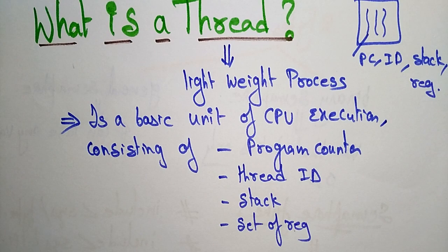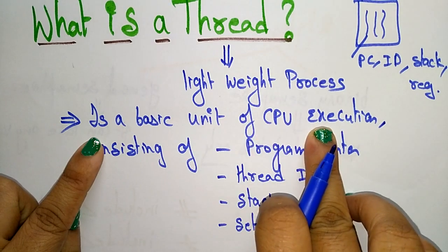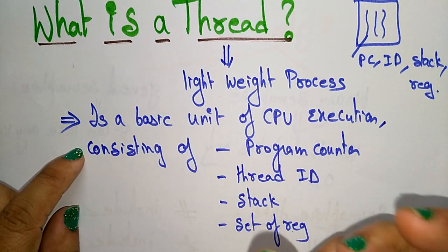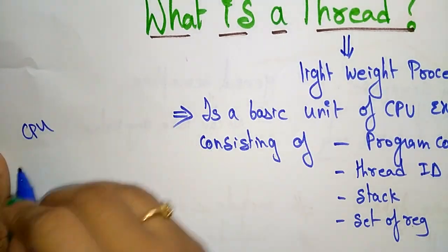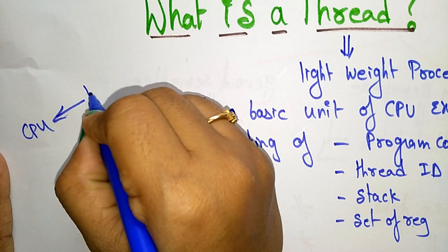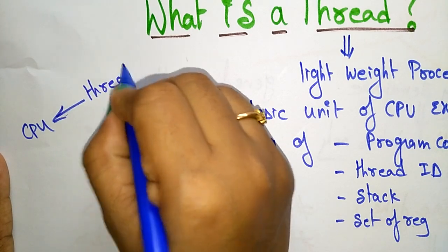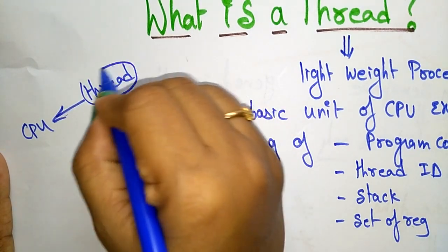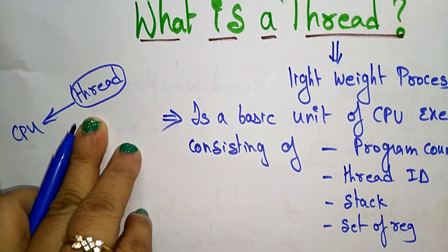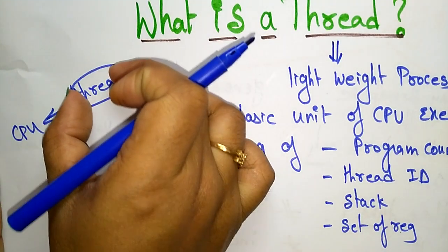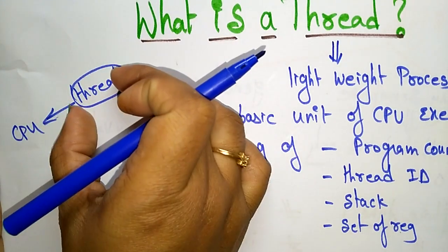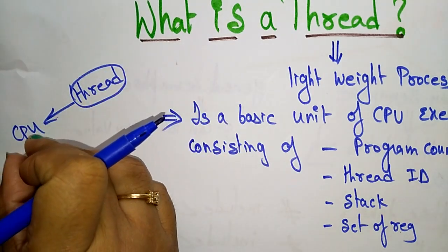So that is a thread. A thread is a lightweight process and it is the basic unit of CPU execution. Each thread has a program counter, thread ID, stack, and set of registers. These components are present in each thread, and that basic unit is what gets executed in the CPU.